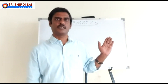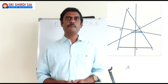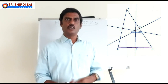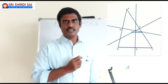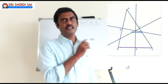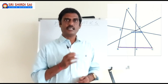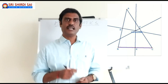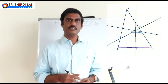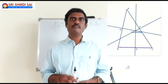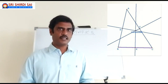You already know what a circumcenter is. Circumcenter is the point of concurrence of 3 perpendicular bisectors of the sides of a triangle. Look at the diagram. In triangle ABC, 3 perpendicular bisectors are drawn and they meet at one point — that is called the circumcenter. The circumcenter is denoted with the capital letter S.